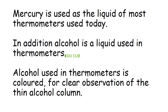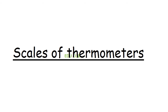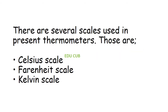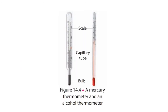Mercury is used as the liquid in most thermometers used today. In addition, alcohol is also used as a liquid in thermometers. Alcohol used in thermometers is colored for clear observation of the thin alcohol column. Our next subtopic is scales of thermometers. There are three scales used in thermometers: the Celsius scale, the Fahrenheit scale, and the Kelvin scale.